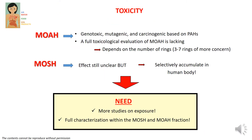From a toxicological viewpoint, we know that MOAH can be genotoxic, mutagenic, and carcinogenic, but most of the information we have is based on parent PAHs, and a full toxicological evaluation of the MOAH is still lacking. We know that the toxicity depends mainly on the number of rings, with the three-to-seven ring compounds being of most concern.